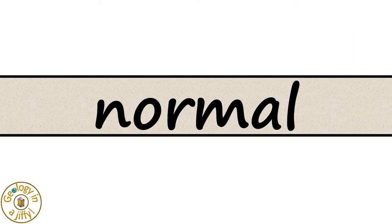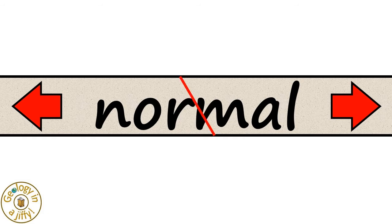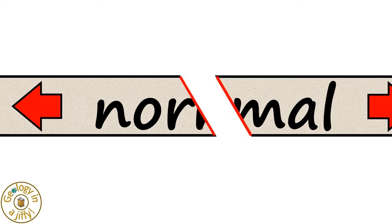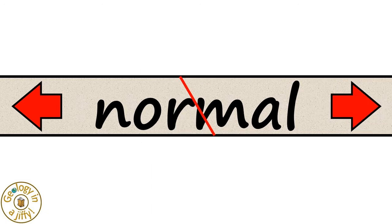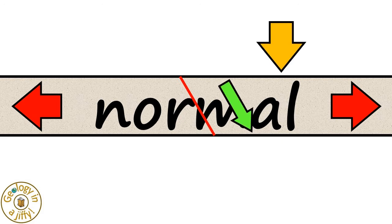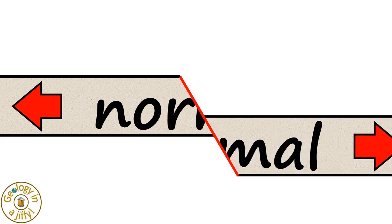If we take a layer of rock and stretch it, a fracture zone will appear as the rock stretches, but it will not simply snap. Instead, as the rocks are stretched and the fracture zone appears, one part of the rock tries to move downwards, which it eventually does, moving downwards along a plane of movement called the normal fault.